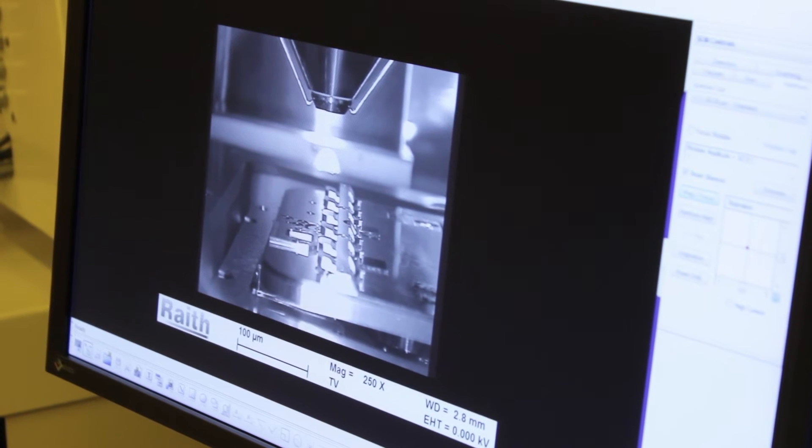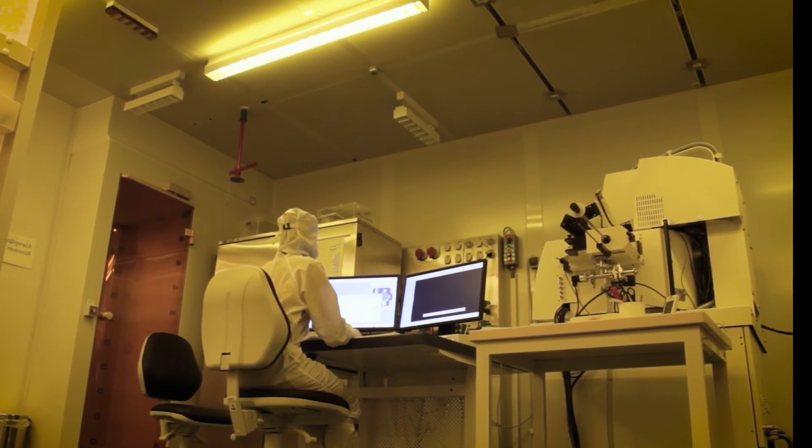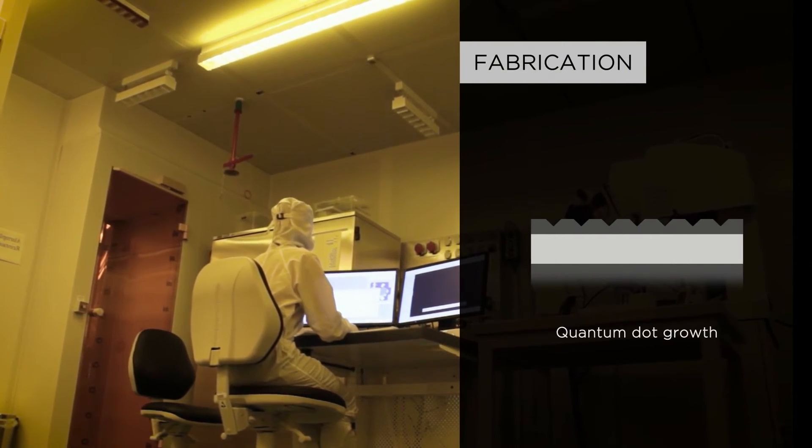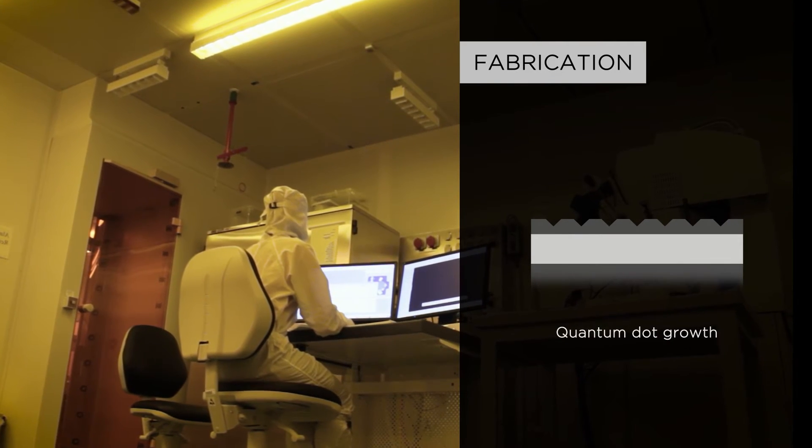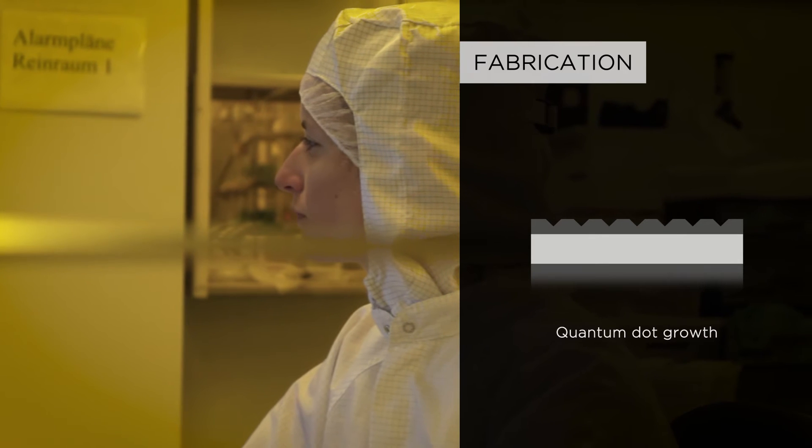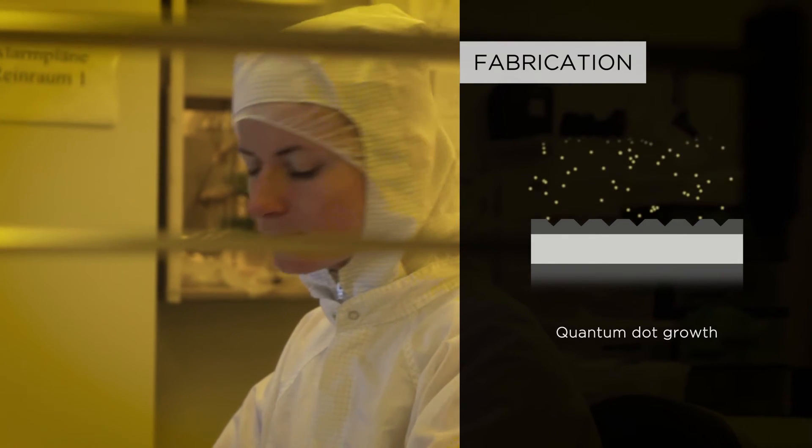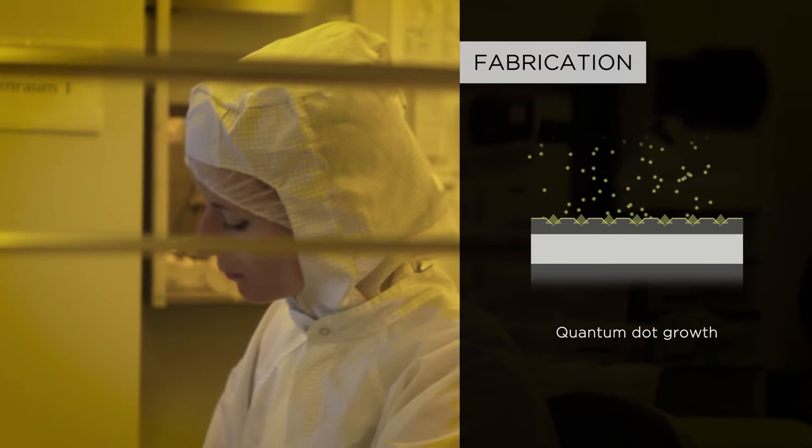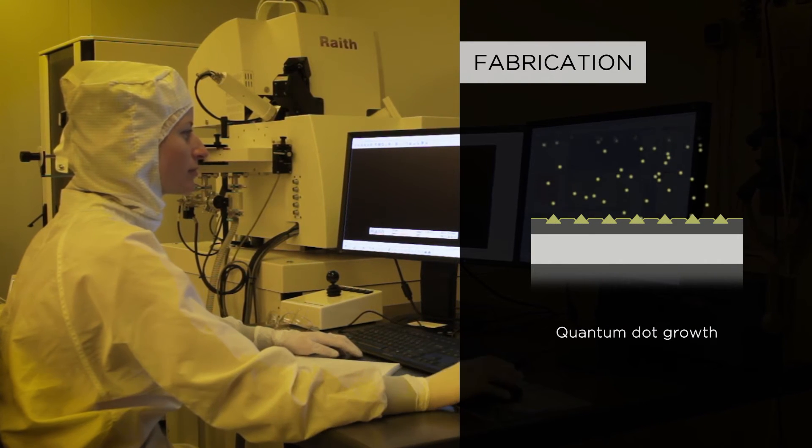The fabrication of such a cavity structure starts with the growth of periodically arranged silicon-germanium quantum dots. These dots are fabricated on a pit pattern substrate by epitaxial growth. During germanium deposition, quantum dots start to nucleate in the pits, resulting in an array of perfectly ordered quantum dots.